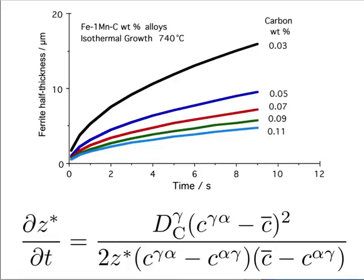This is an interesting graph where I am changing the carbon concentration by equal amounts - 0.11 minus 0.09 is 0.02, and 0.05 minus 0.03 is also 0.02. Why then is the growth rate becoming very sensitive to carbon at low carbon concentrations? Because C-bar minus C alpha-gamma is becoming smaller and smaller and therefore the growth rate is increasing dramatically. If the carbon concentration equals the solubility there is no partitioning at all, there is no accumulation of carbon in the austenite, and the growth rate should go to infinity.